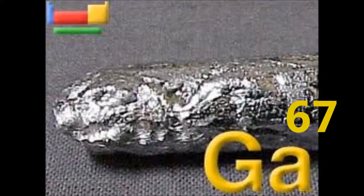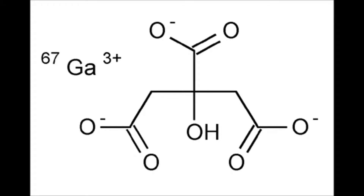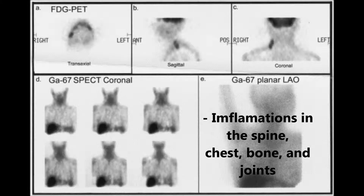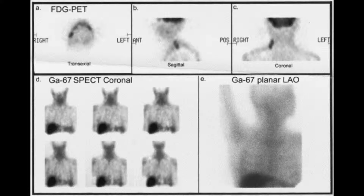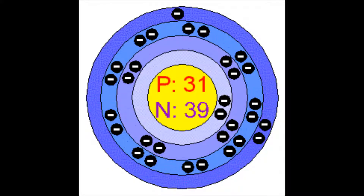Gallium-67 produces radiation which is a gamma ray emitter, since it is imaged with a gamma camera. The scan firstly detects infections or inflammations in the spine, chest, bones and joints of other regions. It is also used to evaluate people with lung disease and to examine patients with acquired immune deficiency syndrome, AIDS.